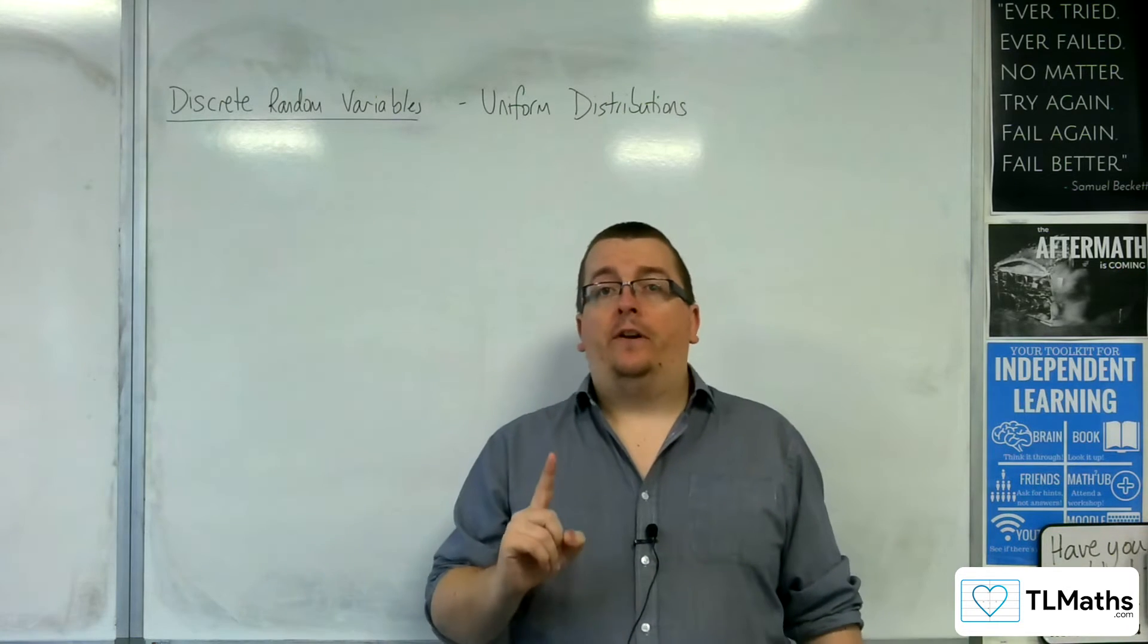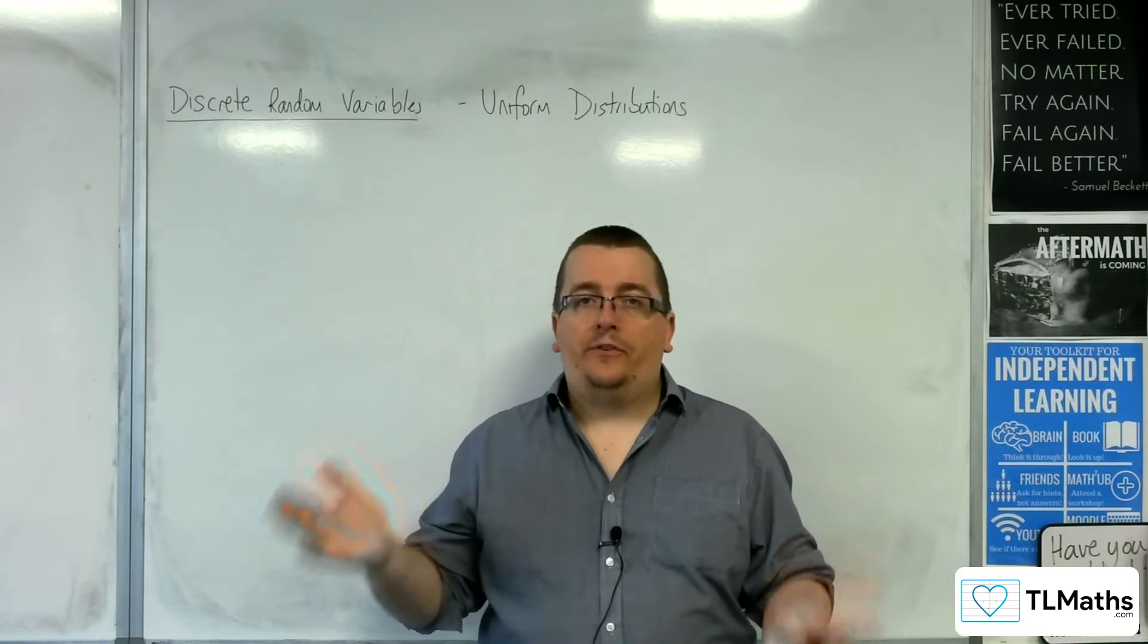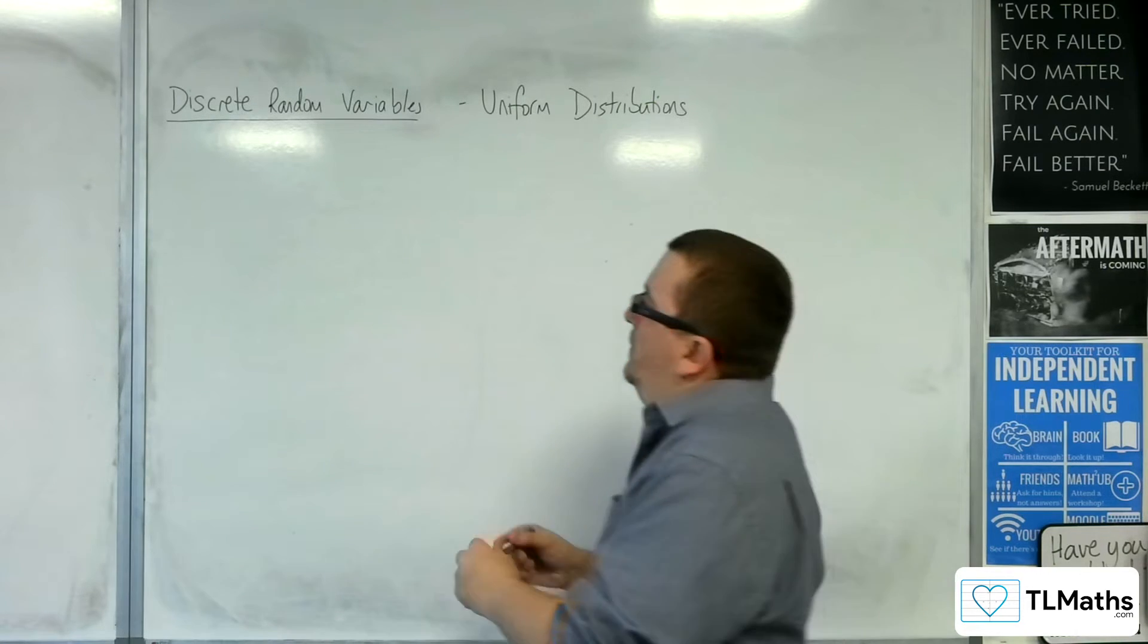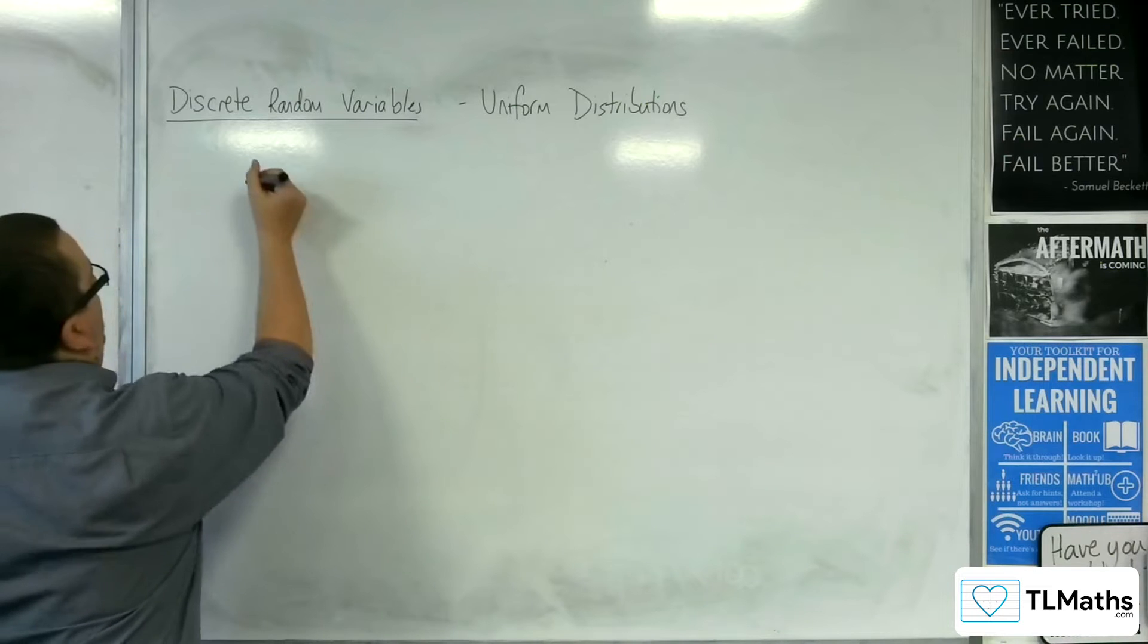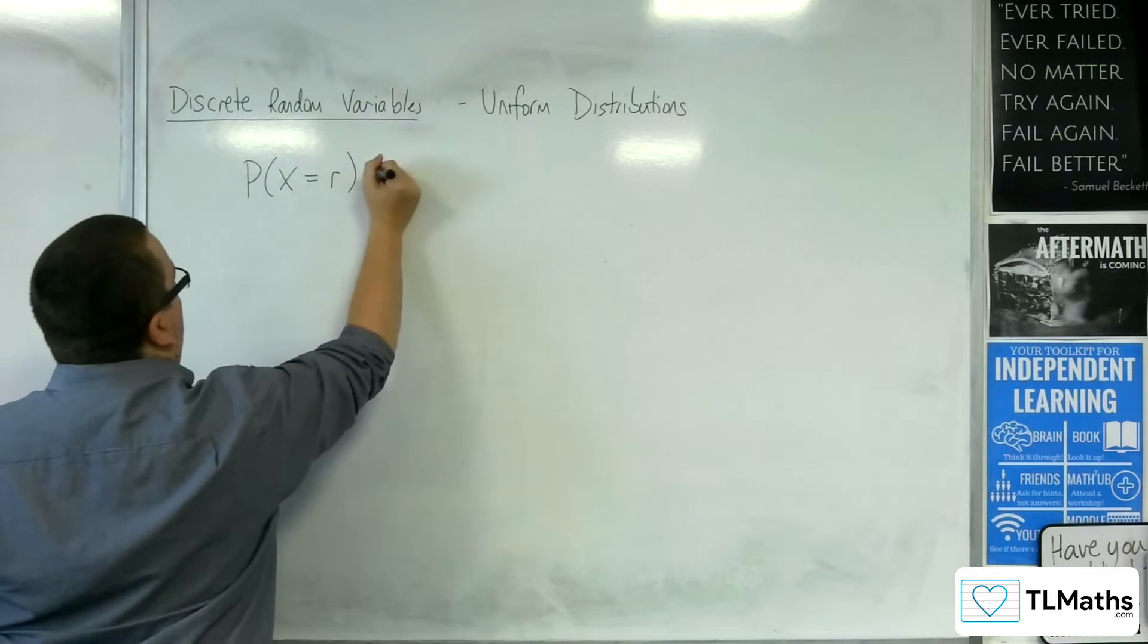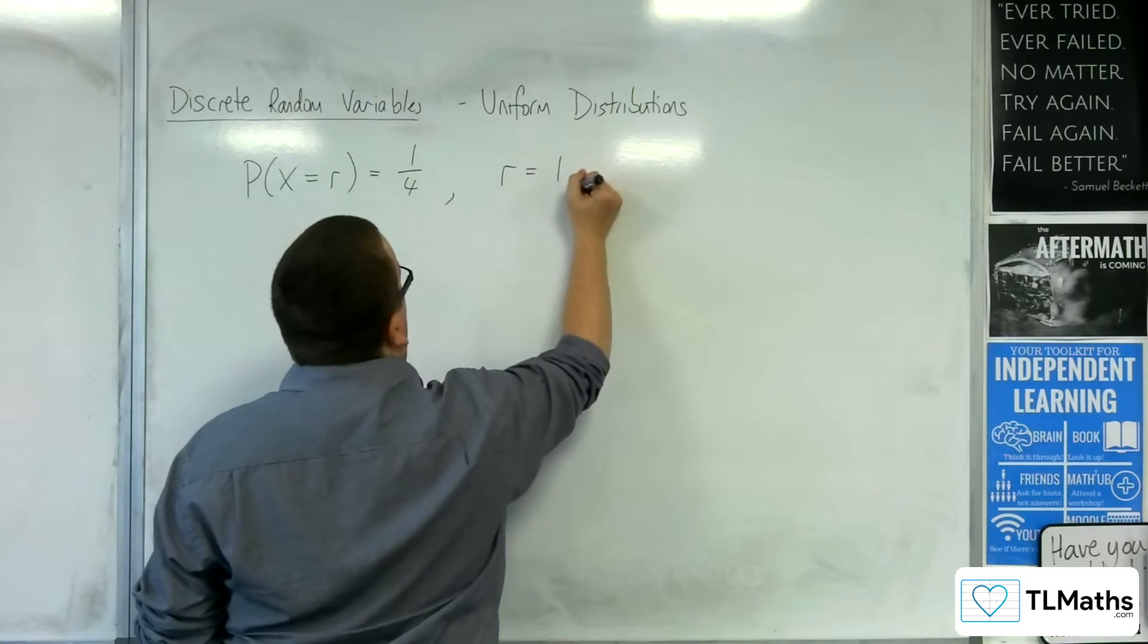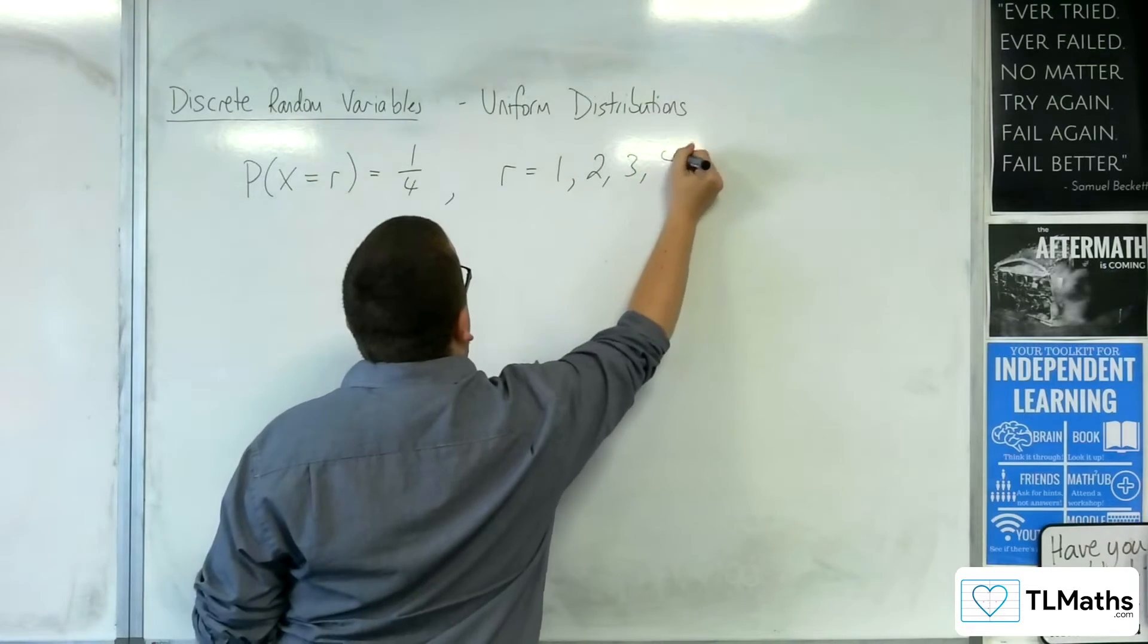And what that identifies is that for every event, you have exactly the same probability. So the idea would be that if I said the probability of X being equal to r is one quarter, where r could be one, two, three, or four,